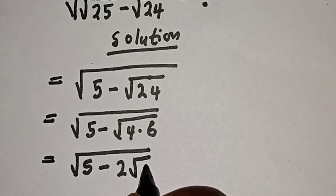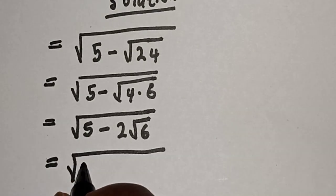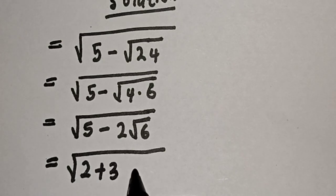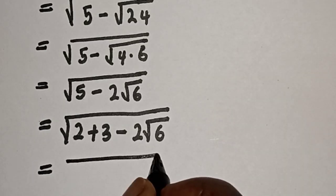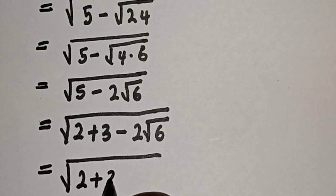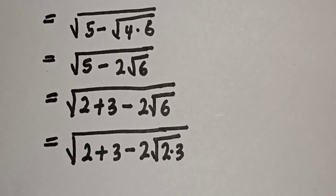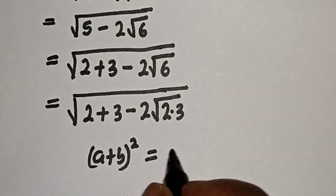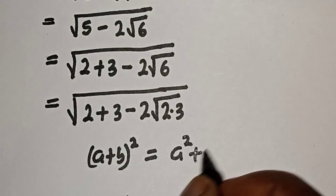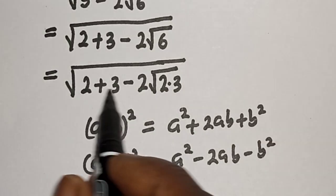This is equal to 5 — which can be written as 2 plus 3 — minus 2 root 6. This is equal to square root of 2 plus 3 minus 2 root 6, which can be written as root 2 multiplied by root 3. Take note that (a + b)² is equal to a² plus 2ab plus b², and we want to transform this expression into that form.